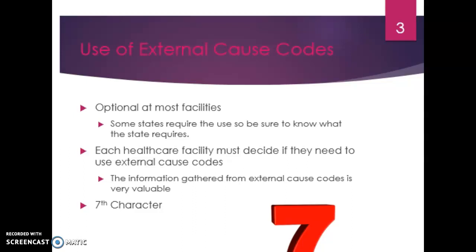Our external cause codes have seven-character digits, just like we saw in the rest of our injury, poisoning, and complication sections. Our seventh characters are A, D, and S — A is initial, D is subsequent, S is sequela.